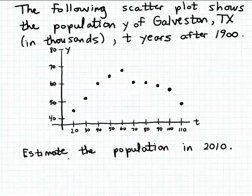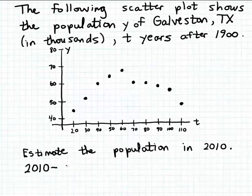We want to use the scatter plot to estimate the population in 2010. The calendar year 2010 corresponds to 110 elapsed years after 1900, which is easy to calculate — you can do it in your head, or on paper by subtracting 1900 from 2010. That gives us a t value of 110.